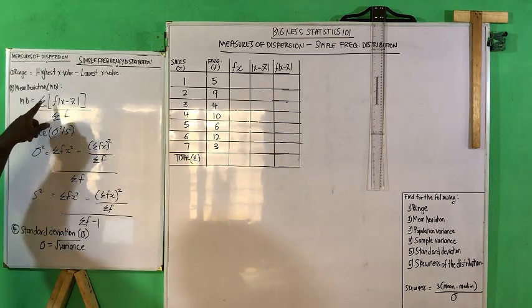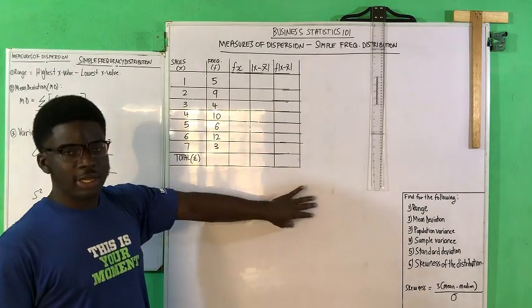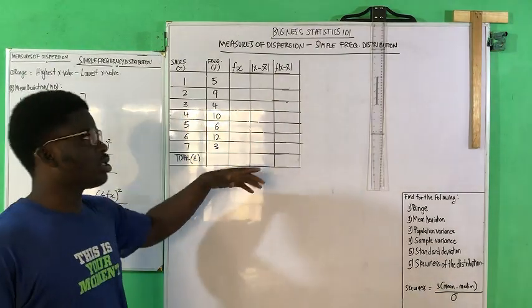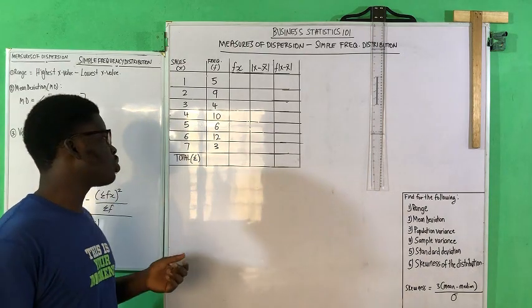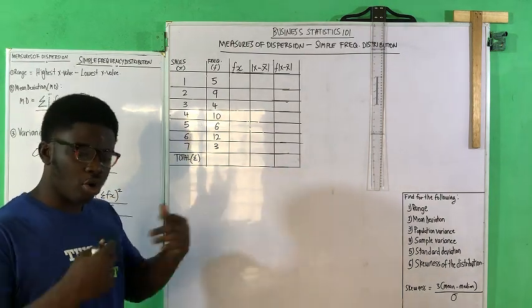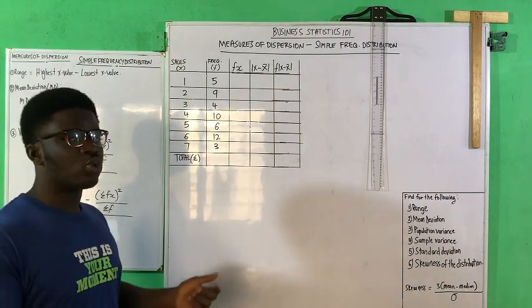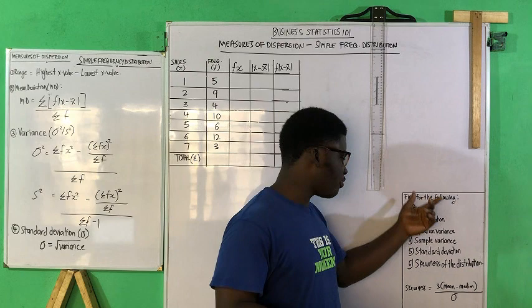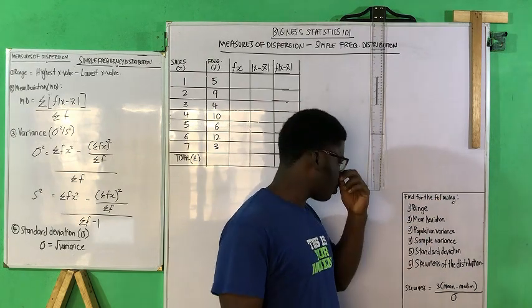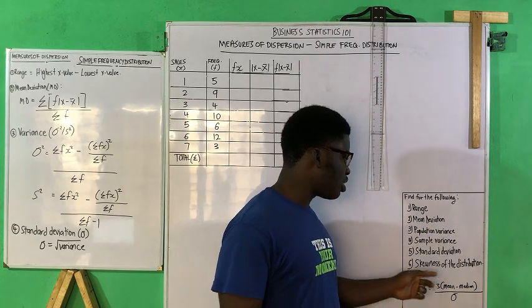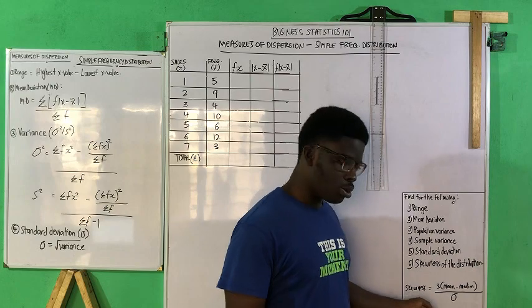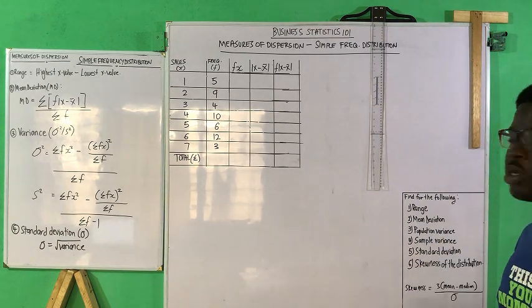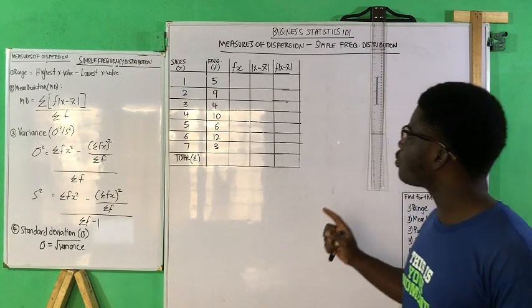We can go straight away and find the mean. This table is from a questionnaire — it's a practical exercise we use to test or practice our understanding of the concepts and how to go about them in an examination. With this table you've been given, you have to find: the range, mean deviation, population variance, sample variance, standard deviation, and the skewness of the distribution. We'll do skewness at the last part of this video because of the median.